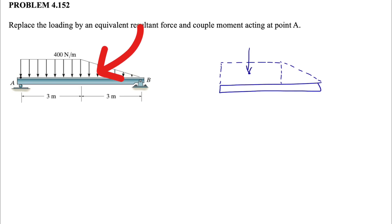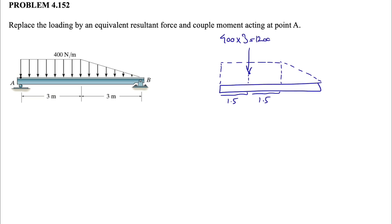First we have to figure out where each of these forces are applying. For the rectangle on the left side, the centroid is exactly at the center, which is half of three, so 1.5m from the left. The force for the rectangle is simply 400 times the base of three, giving us 1200 N.